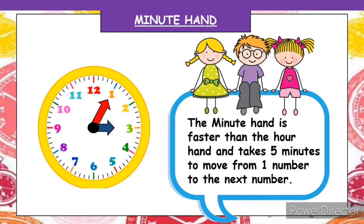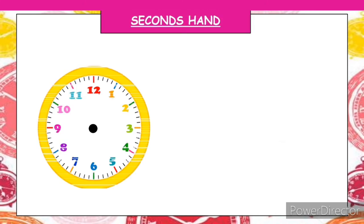Compared to the hour hand, which takes one complete hour to move from one number to the next, the minute hand takes only five minutes to move from one number to the next number. Now we are going to learn some important points about the second hand, which is the fastest hand.